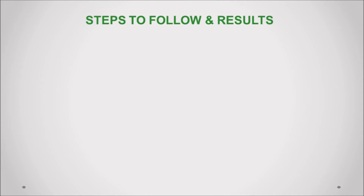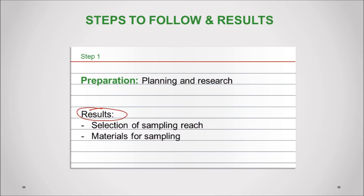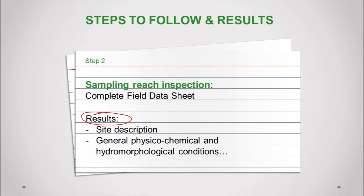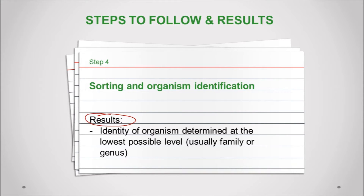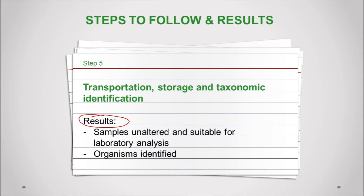Biological sampling consists of five principal steps. The first step is preparation, which involves careful planning of the sampling program and the planning of field activities. The second step, sampling research inspection, takes place on site. The objective here is to complete the field data sheet to document, for example, the site description, bottomed substrata, general physical, chemical, and hydromorphological conditions, and land use. The third step involves taking samples using appropriate field devices by collecting replicas from multiple habitats. The next step is to sort out and identify the organism at the lowest possible level, usually family, genus, but sometimes even the species. Once the taxa are identified, one part of the sample is saved in containers with preservatives and returned to the laboratory for processing, this being the last step of the sampling.